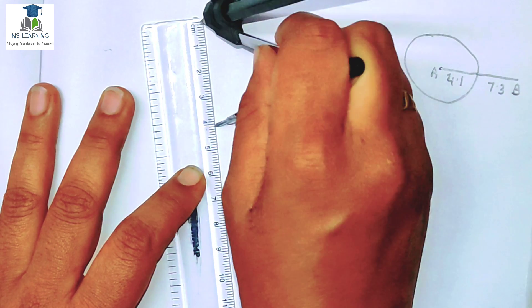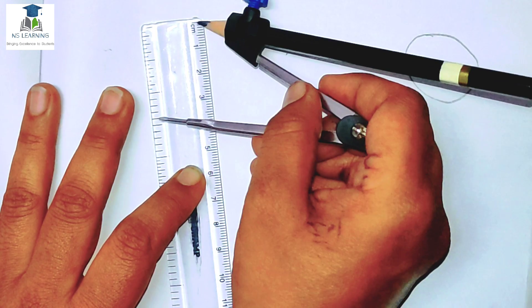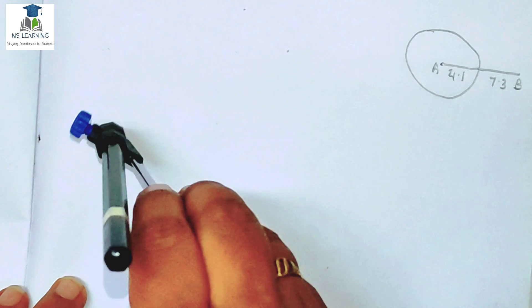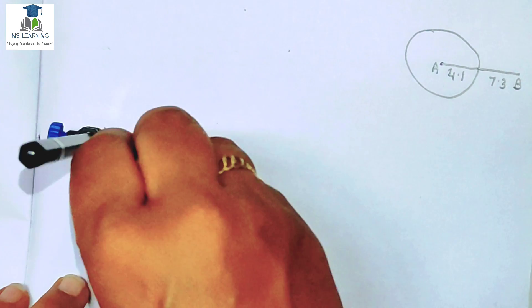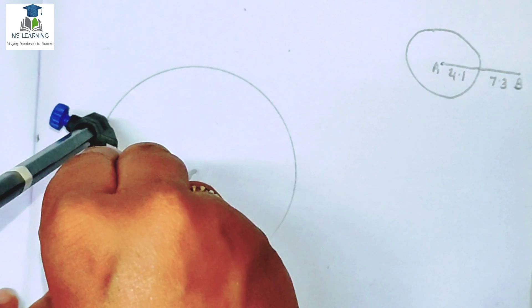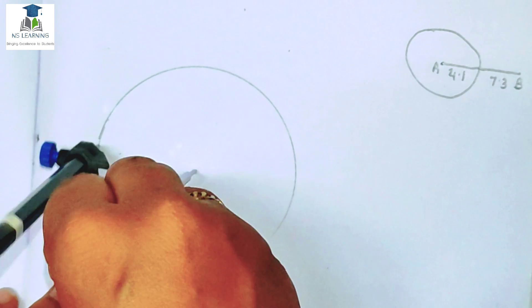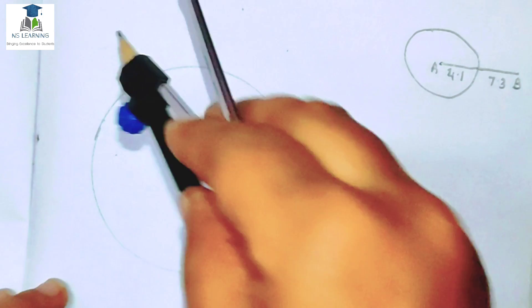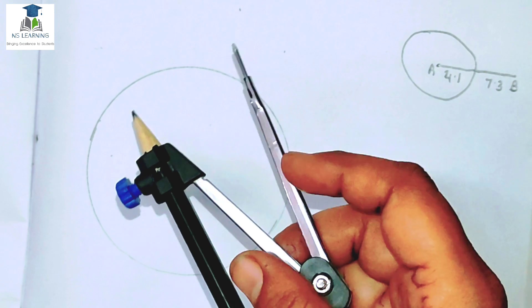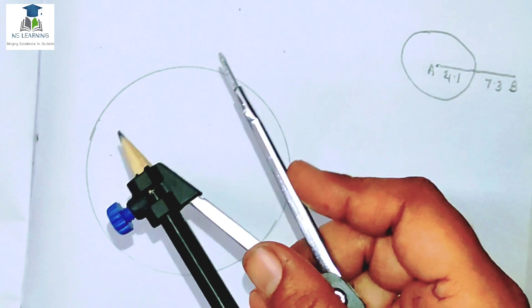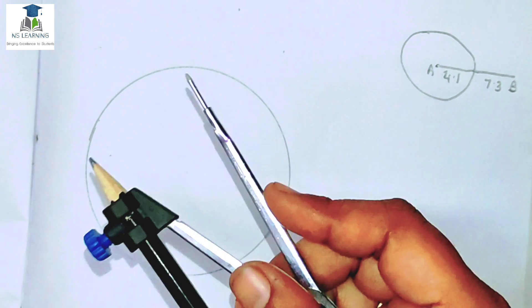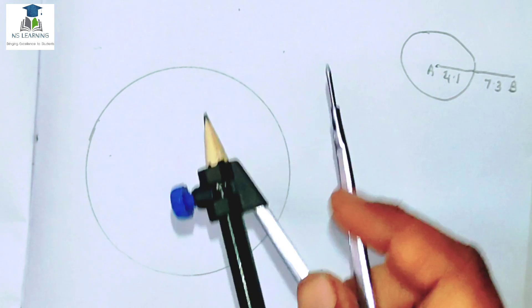0 से लेना है। यहाँ पर cm लिखाए — वो 0 है, और मैंने circle draw किया। यहाँ पर compass को ऐसे नहीं पकड़ना है, otherwise यह press होकर थोड़ा सा measurement decrease हो जाता है।